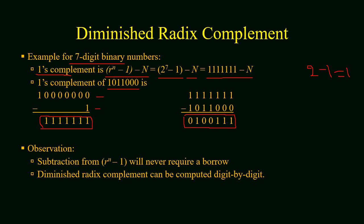Now we have a few observations of (r-1)'s or diminished radix complement. It will never require a borrow and it is computed digit by digit.